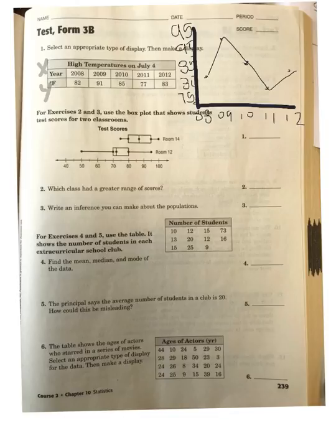Here I constructed my line graph starting with the years 08, 09, 10, 11, and 12, and then our temperatures on our y-axis. Once I plotted the data, I connected my data with my lines to complete my line graph.